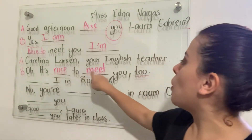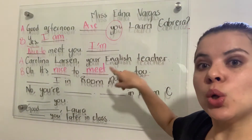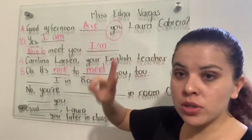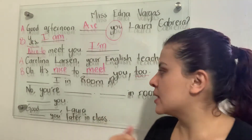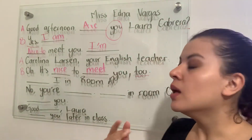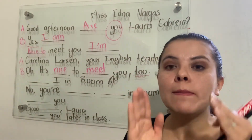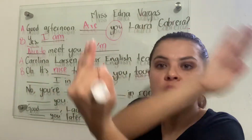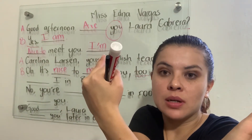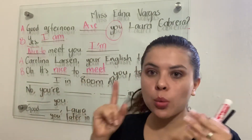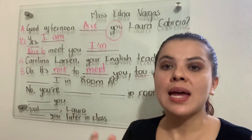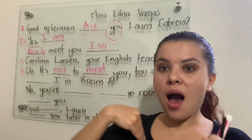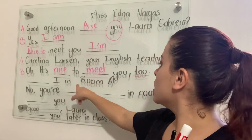Then person B is going to ask a question using verb to be. Remember, when we have a question, we change the verb to be. So I'm going to start with: 'Am I in room A?' — verb to be 'am' comes first.